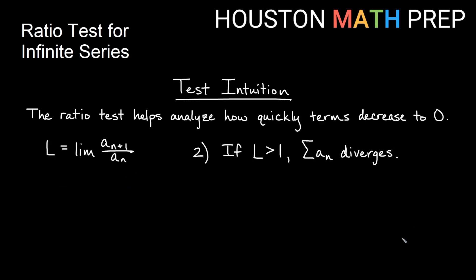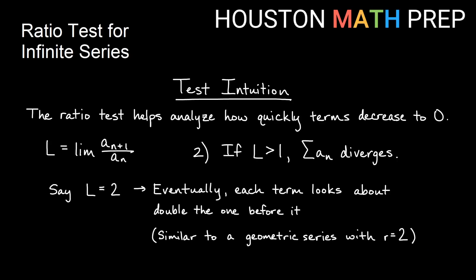Conversely, if the limit is greater than 1 — say the limit is 2 — that means at some future point the next term looks about double the one before it. Those terms basically behave like a geometric series with a ratio of 2. Since a geometric series with a positive ratio greater than 1 diverges, that's why we get divergence when the limit is greater than 1.